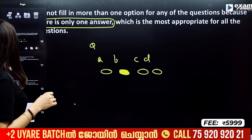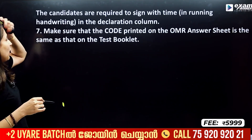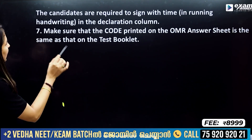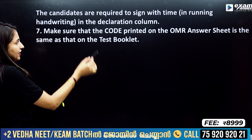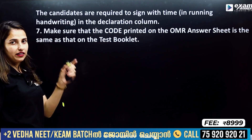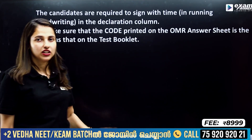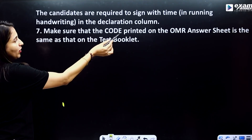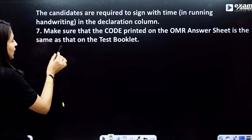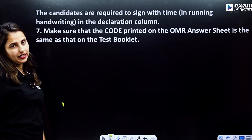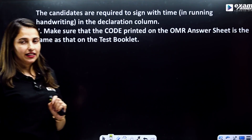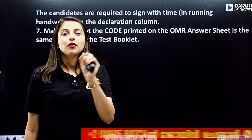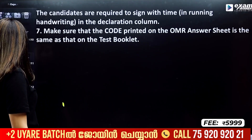The candidates are required to sign with the time in running handwriting, as part of their declaration. Make sure that the code printed on the OMR sheet is the same as that on the test booklet. The OMR sheet has a code, and that same code has to match the test booklet number.